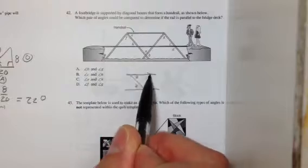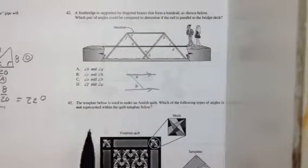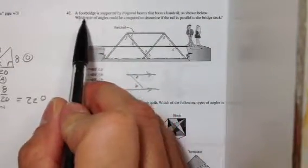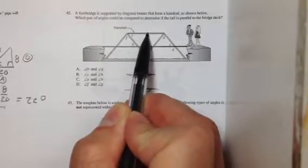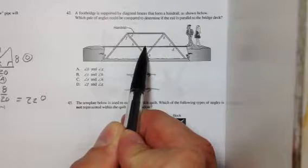And if they are equal, then that means both of these lines are parallel. So the question is asking you what pair of angles could be compared to determine if the rail, which is this, is parallel to the bridge deck below, which is that.